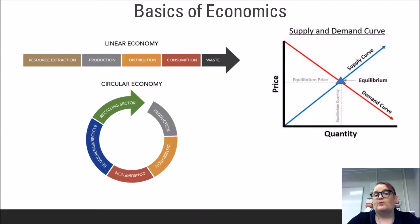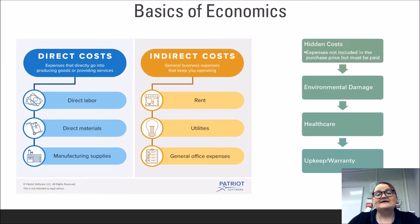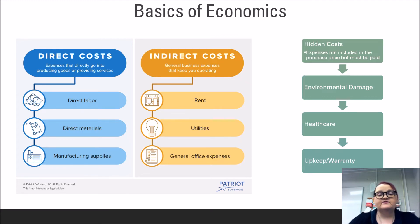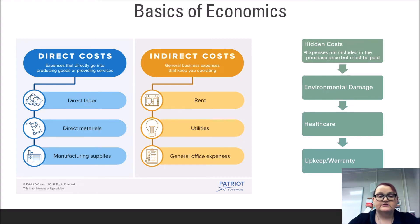In addition to understanding the basic functions and types of economies, we also have to understand the pieces and practices that go into determining how we pay for goods and services. There are three major cost types: direct cost, indirect cost, and hidden cost. Each describes an existing monetary output of corporations and other agencies. Direct costs are those related immediately to the production of the good — the cost of materials, machinery and its maintenance, and paying those who work directly with production — and play a large role in determining the sell price.